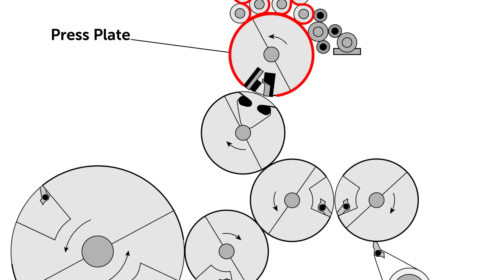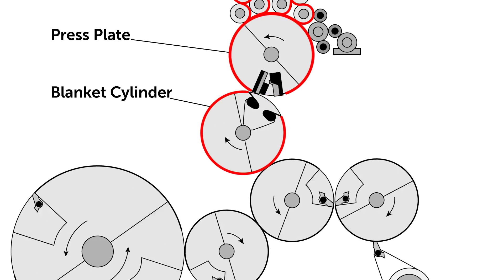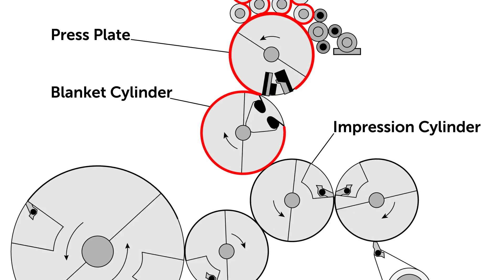It is then passed to the blanket cylinder, which squeezes the water and the inked image area is picked up. It is then passed to the final cylinder, called the impression cylinder. The paper runs between the impression cylinder and the blanket cylinder, pressing the image onto the paper.